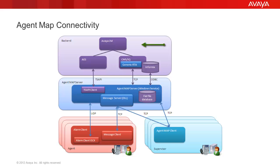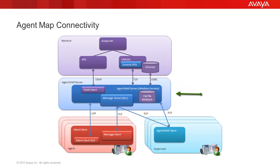This graphic displays the connectivity between Communication Manager and AES, the CMS or IQ, the AgentMap server itself, the AgentMap client, and the optional alarm client that lives on the agent's desktop.